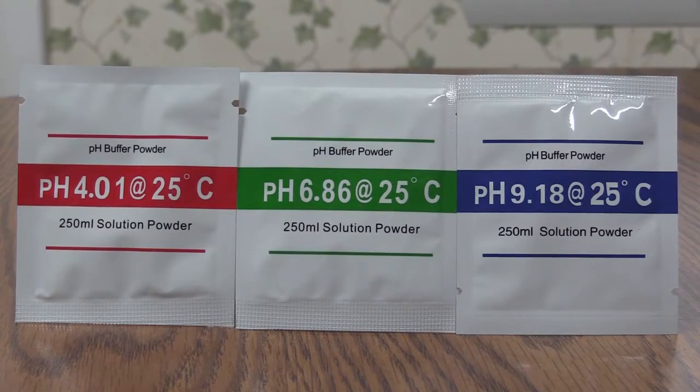The pH buffer packets are used to make pH calibration solutions. The powder must be mixed with distilled or reverse osmosis water. Tap water, filtered tap water, and spring water cannot be used to make the calibration solutions.